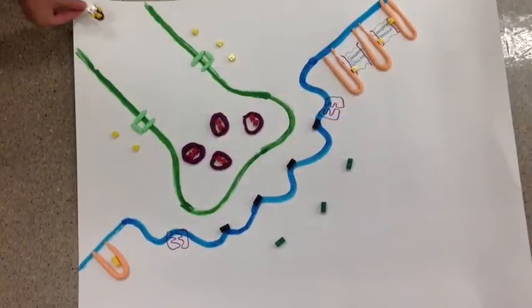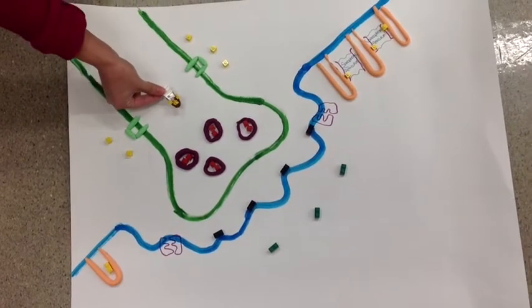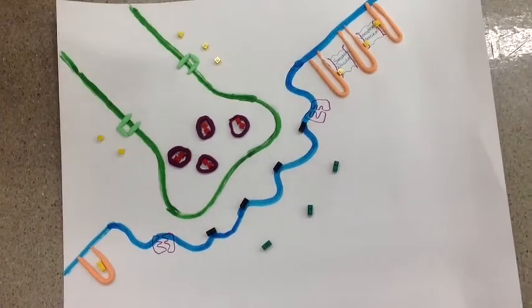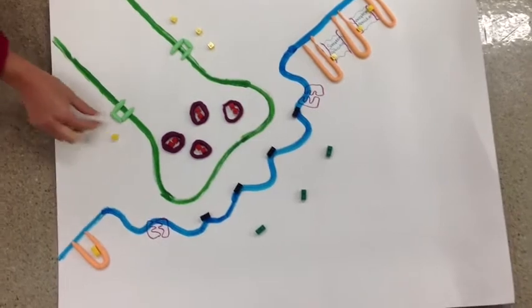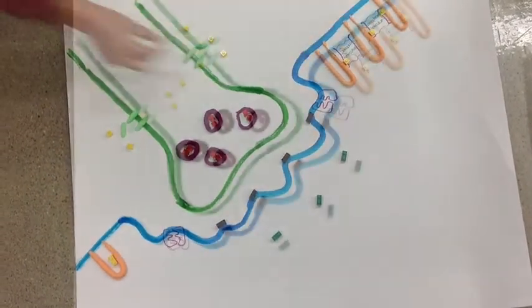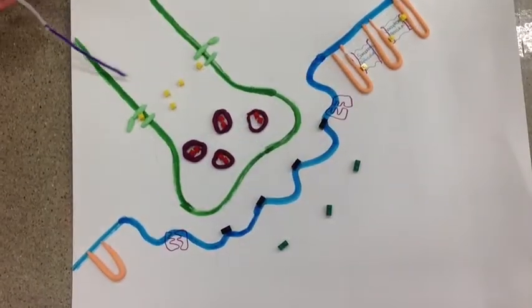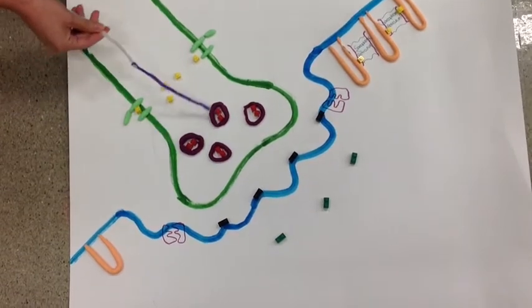First an action potential arrives at the synaptic knob. Calcium channels in the membrane then open up allowing calcium to flow into the cell. Increased calcium causes synaptic vesicles filled with acetylcholine to fuse with membrane.